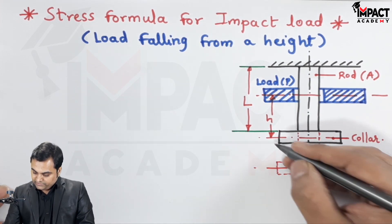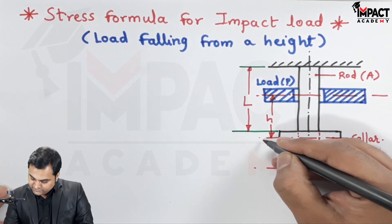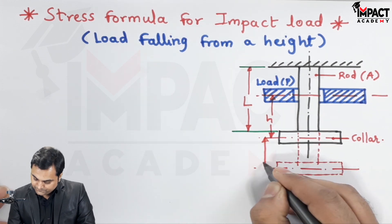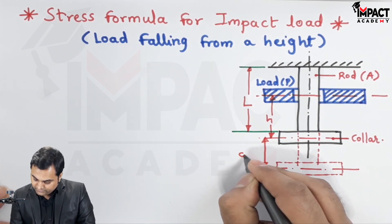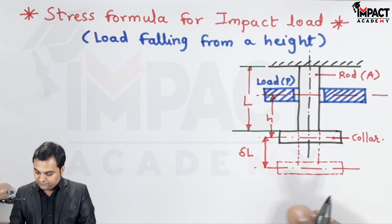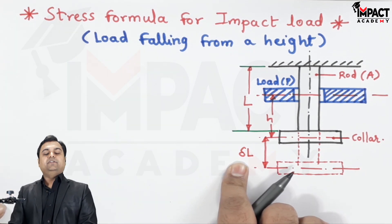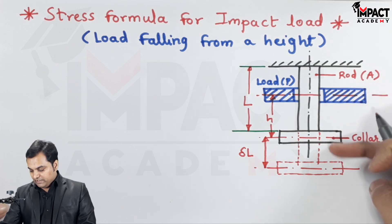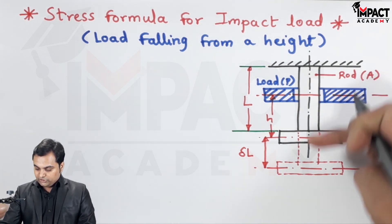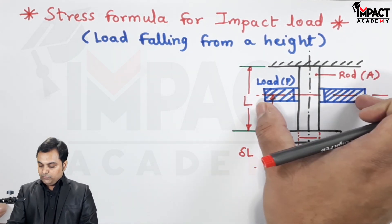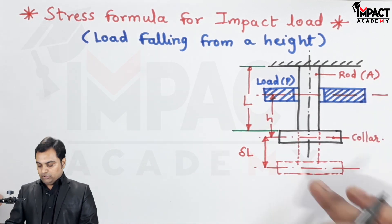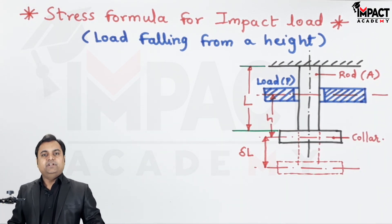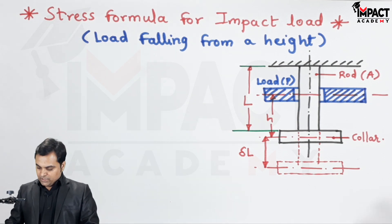The collar gets displaced, and this displacement is nothing but the instantaneous deflection. This delta L is called the instantaneous deflection because of the load falling from the height. As we see, the rod gets elongated, but the moment we remove this load, the rod will regain its original shape because of the stored energy called the strain energy.